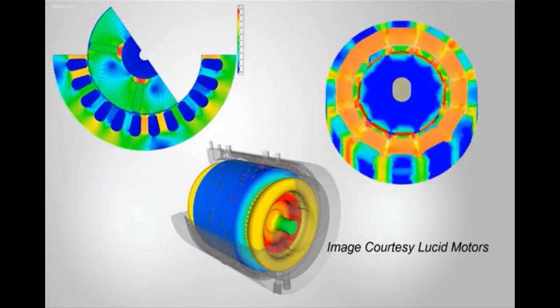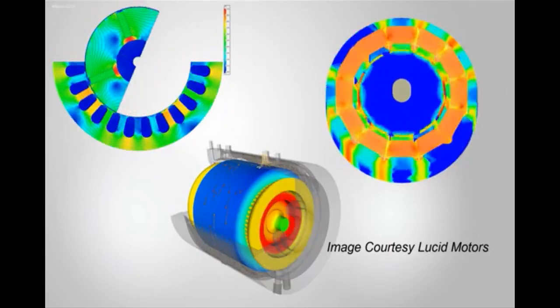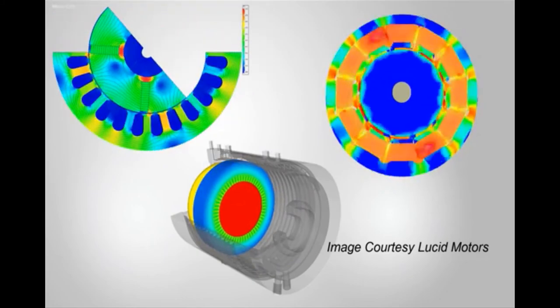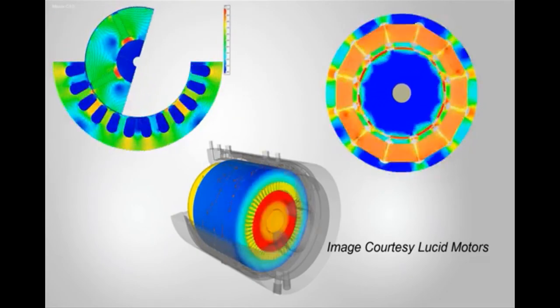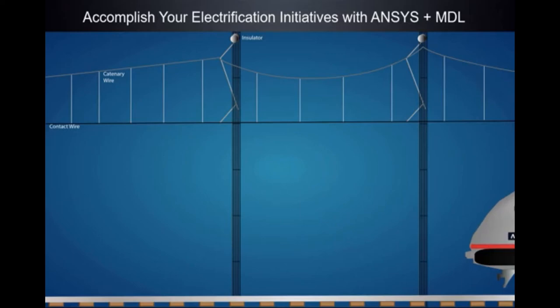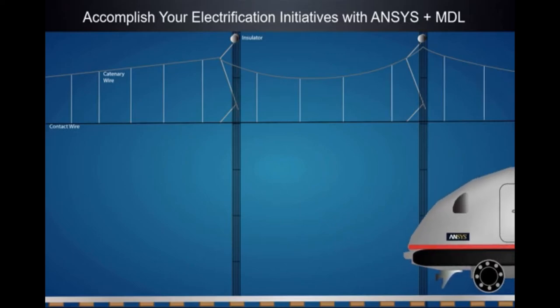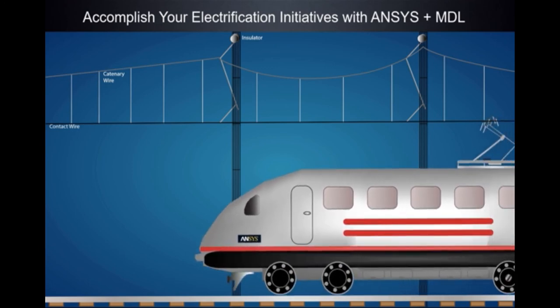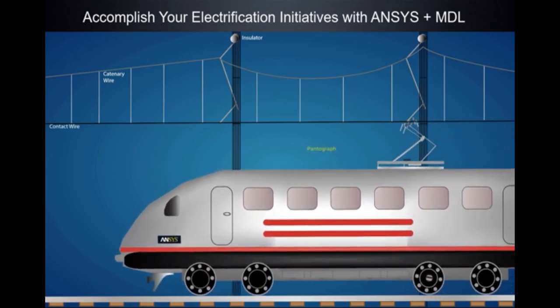ANSYS-MAXWELL with ANSYS-FLUENT and MECHANICAL helps create accurate high fidelity models faster, reduces prototypes and eliminates costly last minute design changes. Multi-physics analysis with ANSYS tools for motor design allows you to rapidly accomplish your electrification initiatives.